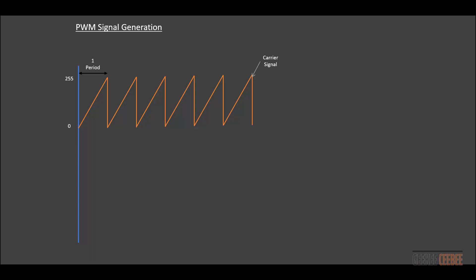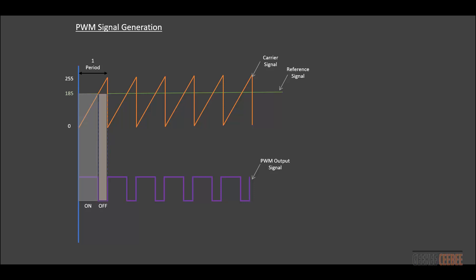That gives us one period. The user provides a reference signal — let's set it to 185. Based on this, we get a particular output duty cycle. In one period, when the carrier signal is below the reference signal, the PWM output is in the on state. When the carrier signal is above the reference signal, the PWM is in the off state, giving us a 72% duty cycle.